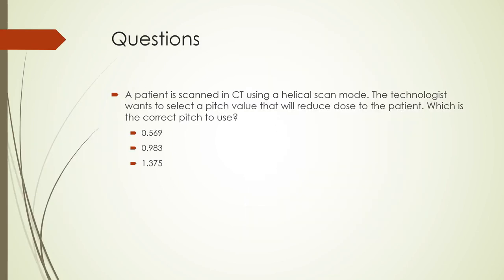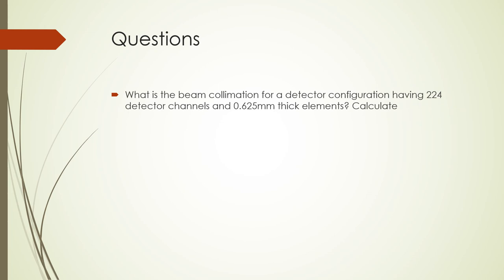Let's finish with review questions. First: a patient is scanned in helical mode and the technologist wants to select a pitch value that will reduce dose. The choices are 0.569, 0.983, or 1.375 — the correct choice is 1.375, as a higher pitch reduces dose. Second: what is the beam collimation for a detector configuration with 224 detector channels and 0.625 mm thick elements? The correct answer is 224 times 0.625 mm, giving a beam collimation of 140 mm. Thank you for watching this presentation.